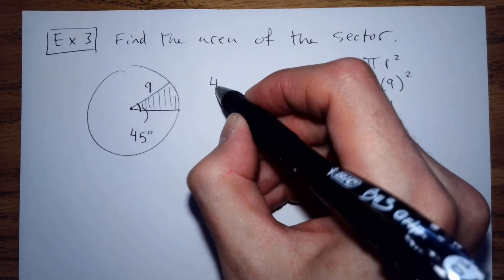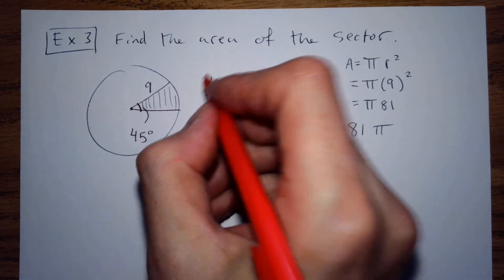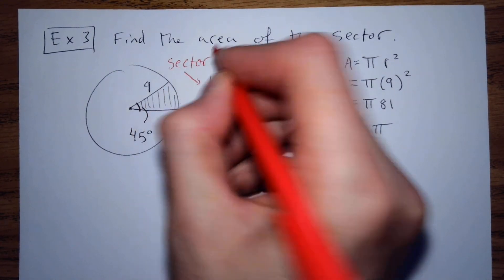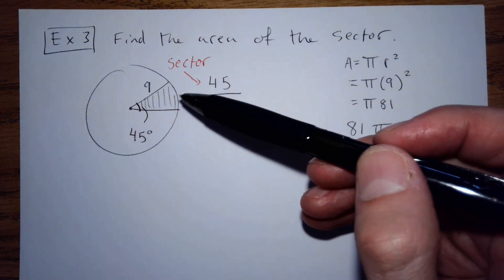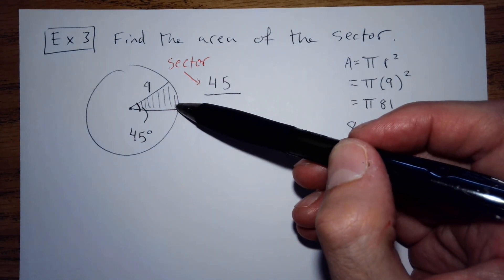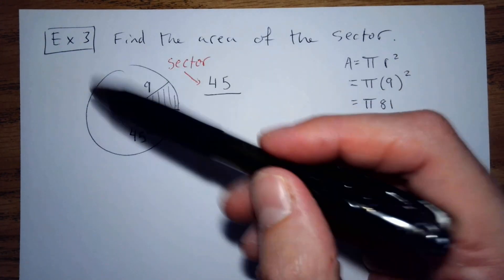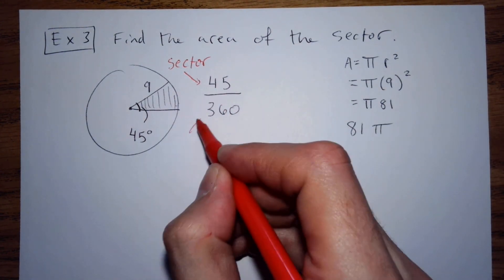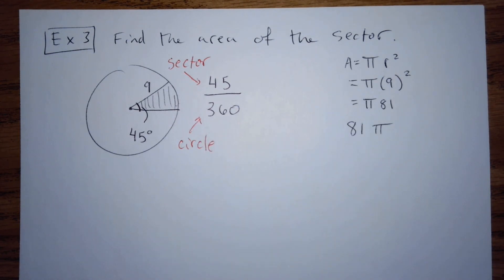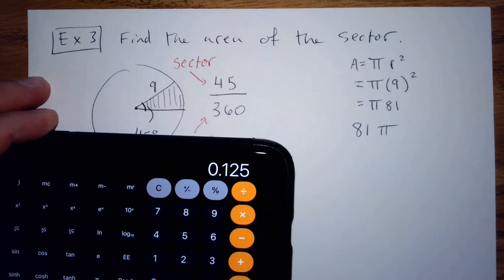The way you can figure that out is take the degrees for the sector and divide it by how many degrees are possible. So we're trying to see how much of the circle this sector is. Divide by 360. So this is for the sector, this is for the circle. That number, if you divide in the calculator, 45 divided by 360 gives you 0.125.